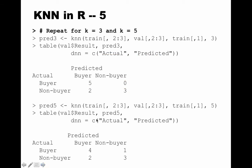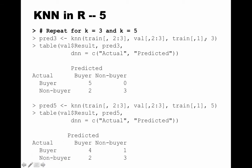We repeat the same call for k=3 and k=5. For k=3, all buyers are predicted correctly and about 60 percent of non-buyers are predicted correctly — a clear improvement. Moving to k=5, performance actually deteriorates slightly compared to k=3.